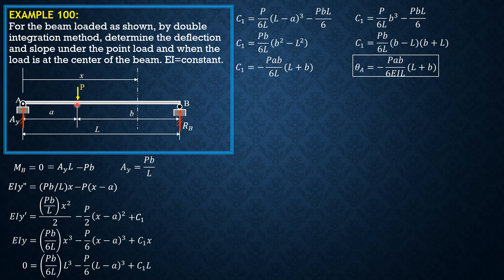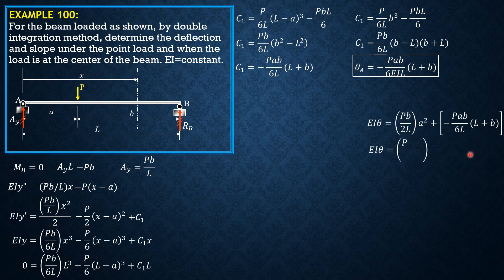For the slope under the load, we set X equals A in the slope equation. So EI times theta equals PB over 2L times A squared — the bracket term is zero when X equals A — plus C sub 1, which is negative PAB over 6L times the quantity L plus B. Expanding: EI theta equals PA squared B over 2L, minus PAB over 6, minus PAB squared over 6L.